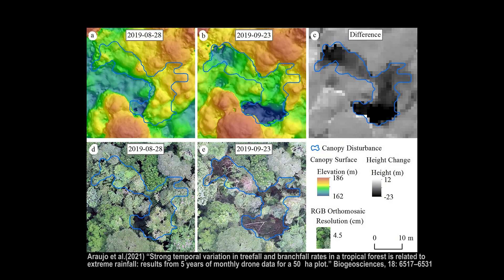The spatial data can be very informative when collected in a time series. The power of time series photogrammetry is evident from a study that used drone imagery collected in monthly intervals in Barro Colorado Island, Panama.